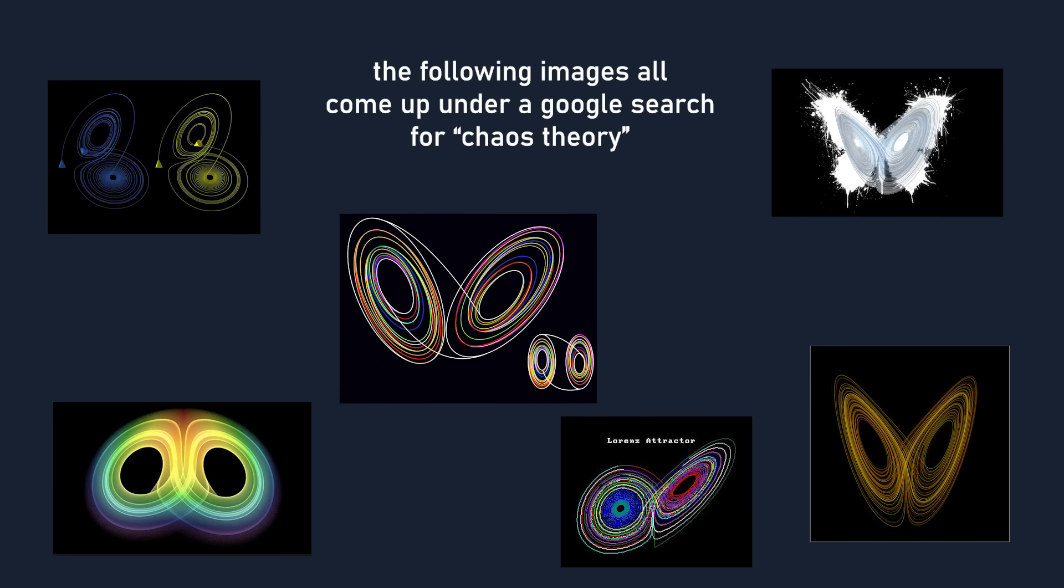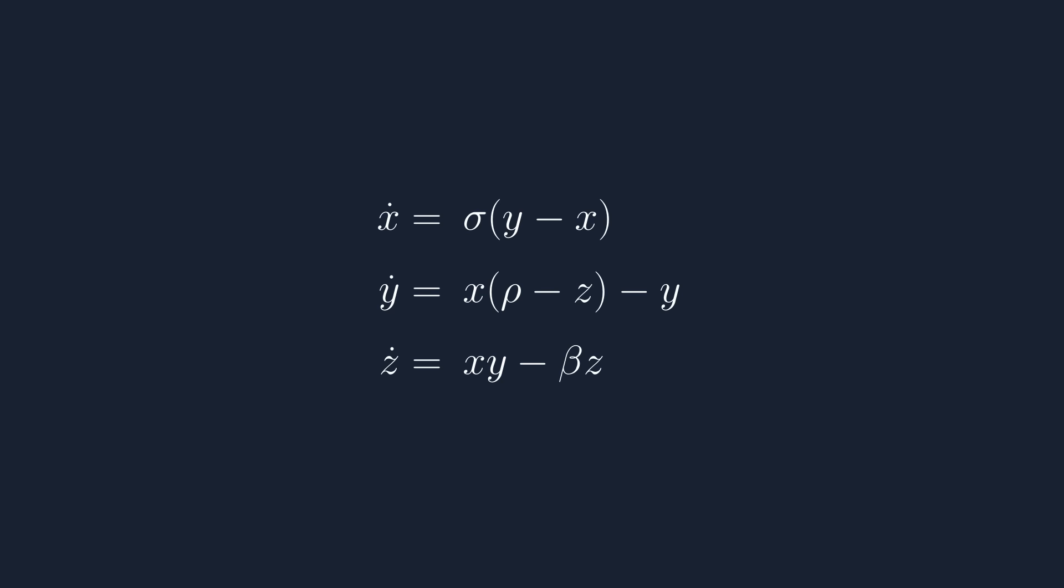The Lorenz equations have a few parameters that can be tweaked to alter the behavior of the system, but we'll be using values of 28, 10, and 8 over 3. This is what's known as a strange attractor, and here's what that means.